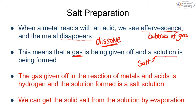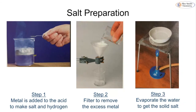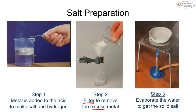Sometimes we don't want the solution — we want the solid salt. We can get the solid salt by evaporation, which means we remove the water. This is done in three steps: first, add the acid to the metal to make the salt and hydrogen — you can see bubbles as the hydrogen is given off. Then we filter the solution to remove any excess metal. Finally, we evaporate the water, which gives us the solid salt.